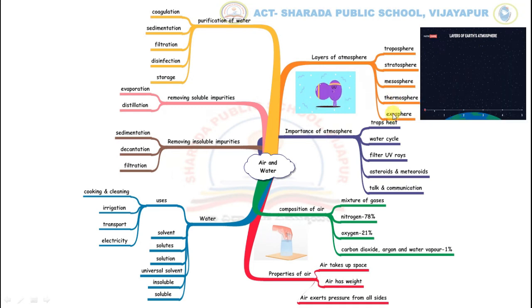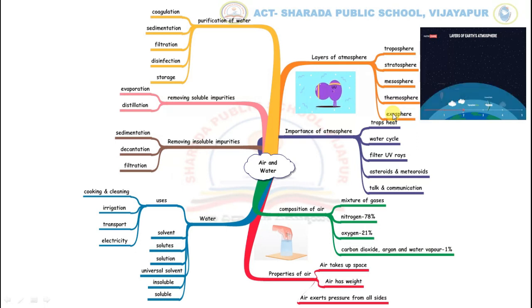The last layer is exosphere. This is the outermost layer of the atmosphere. Some human-made satellites go around the earth in this layer.